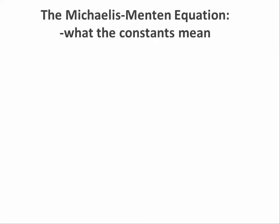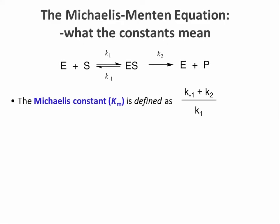Let's have a look at what the constants in the Michaelis-Menten equation mean. The Michaelis constant Km is actually defined as the ratio of rate constants for decomposition of the enzyme-substrate complex over the rate constant for its formation. Decomposition, in turn, is the sum of ES dissociation into E and S with the rate constant K-1 and the catalytic conversion of ES into free enzyme plus product E plus P with the rate constant K2.